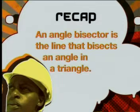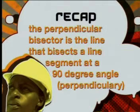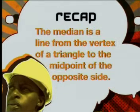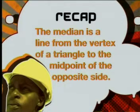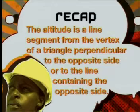We constructed the following lines. Angle bisector: the line that bisects an angle in a triangle. Perpendicular bisector: a line that bisects a line segment at a 90 degree angle. Median: the line from the vertex of a triangle to the midpoint of the opposite side. And altitude: a line segment from the vertex of a triangle drawn perpendicular to the opposite side or the line containing the opposite side.